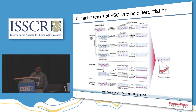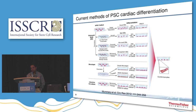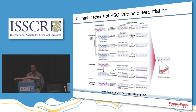Researchers have been switching from embryoid body to monolayer cultures — plating small clumps of pluripotent cells in monolayer or in matrigel-coated plates creating a three-dimensional environment. Another method developed by Christian Mummery's lab uses co-cultures with cells like END2 endodermal cells, where co-culture leads to beating cardiomyocytes. But most of these methods have undefined components, variation, or efficiency problems.